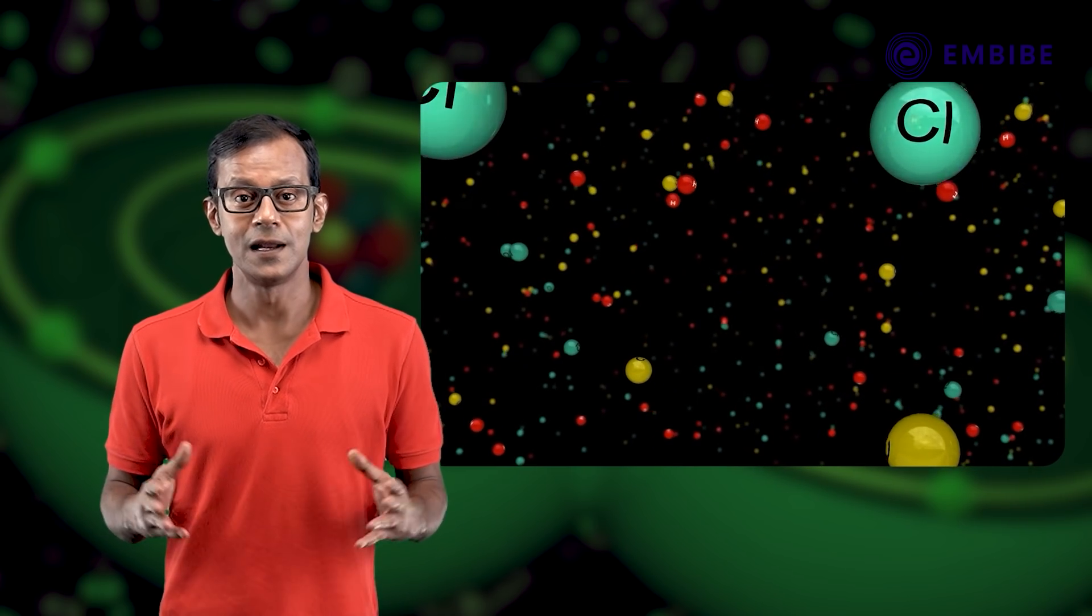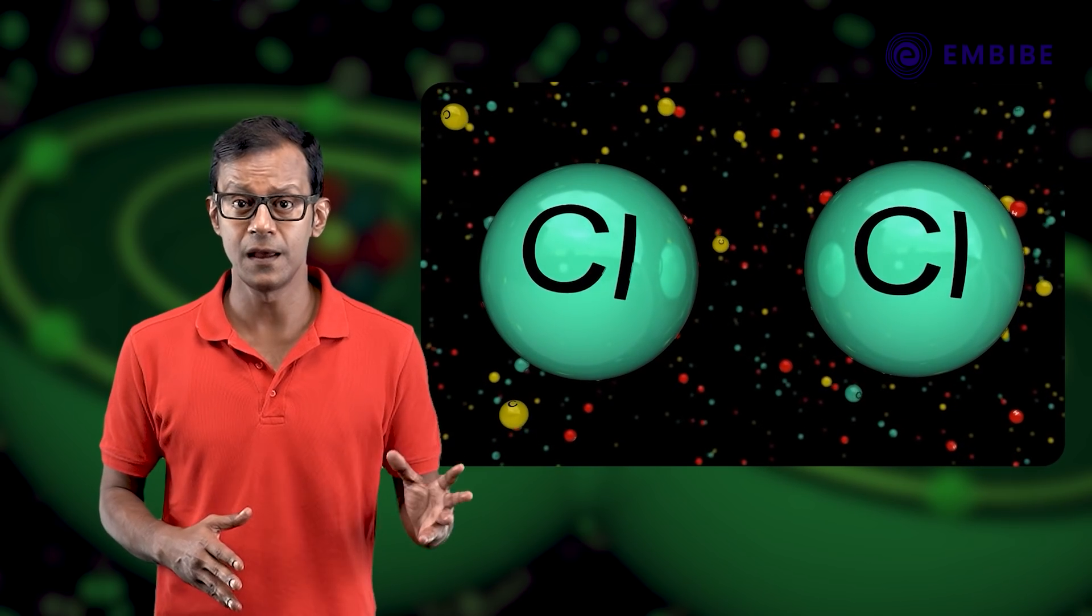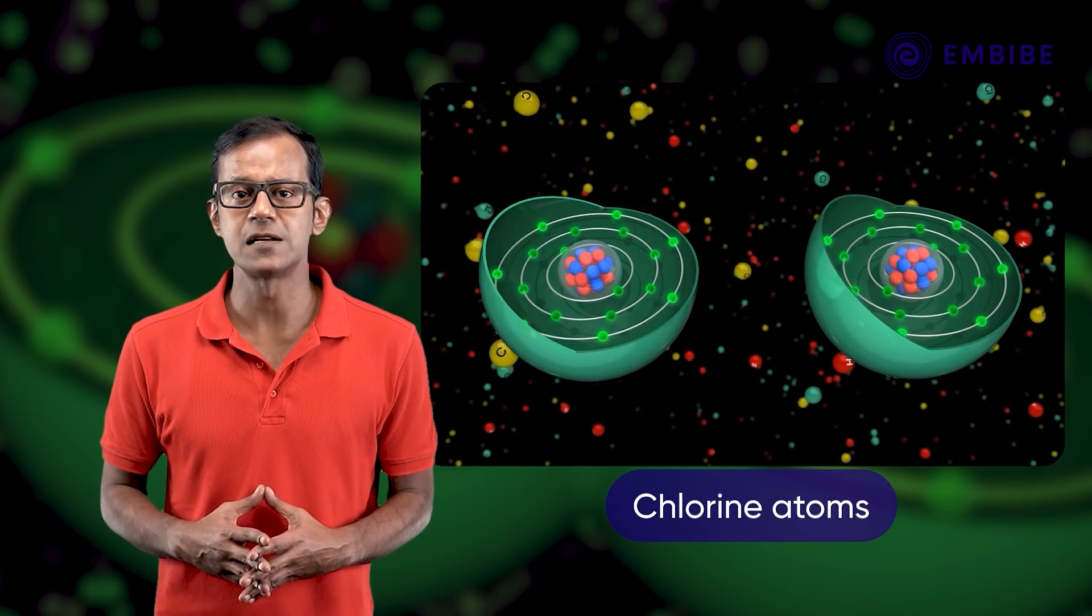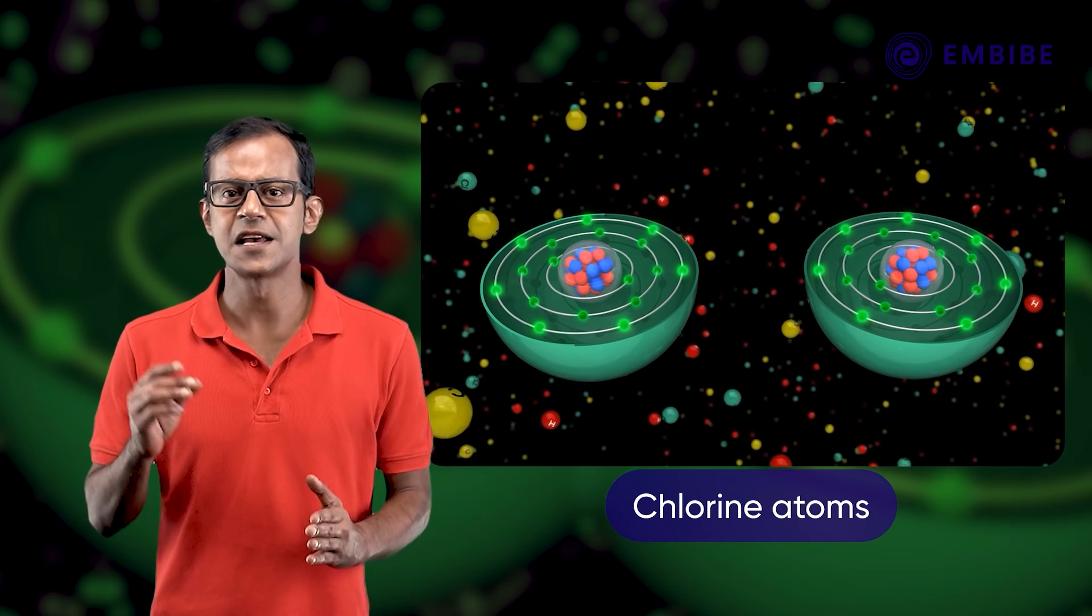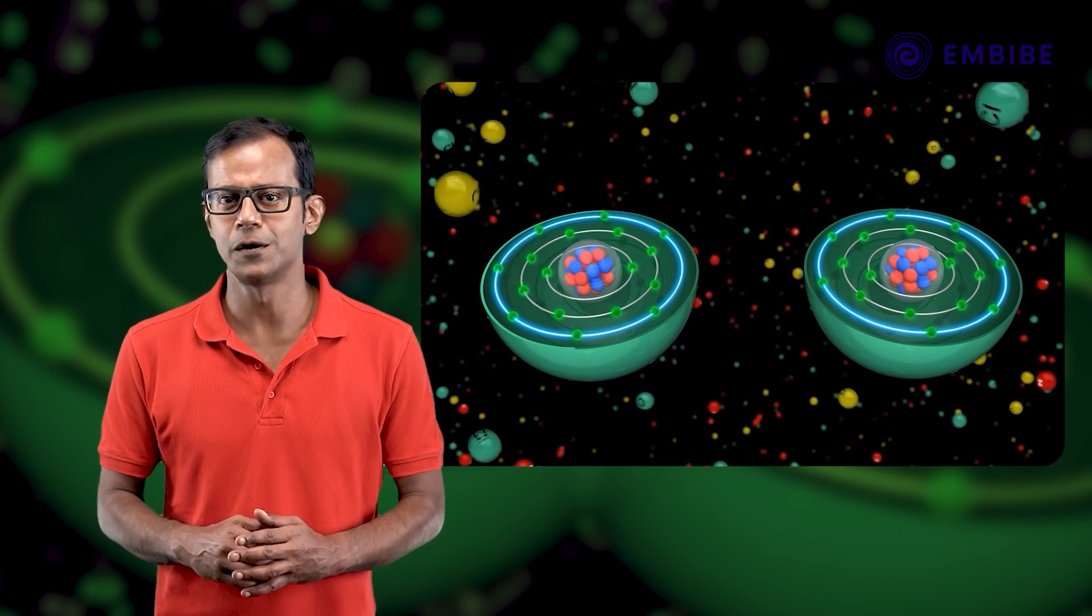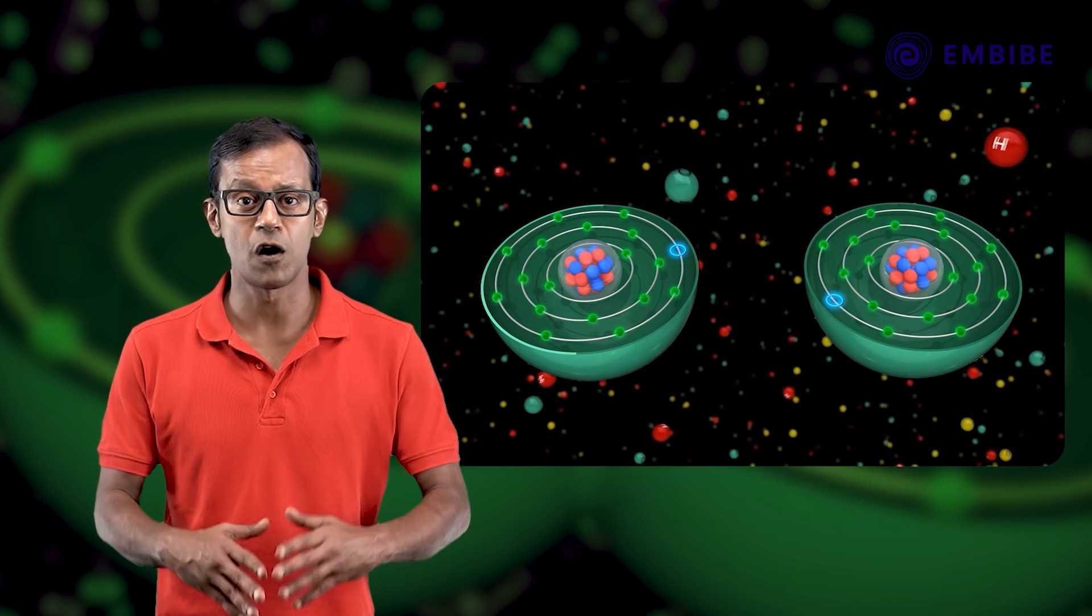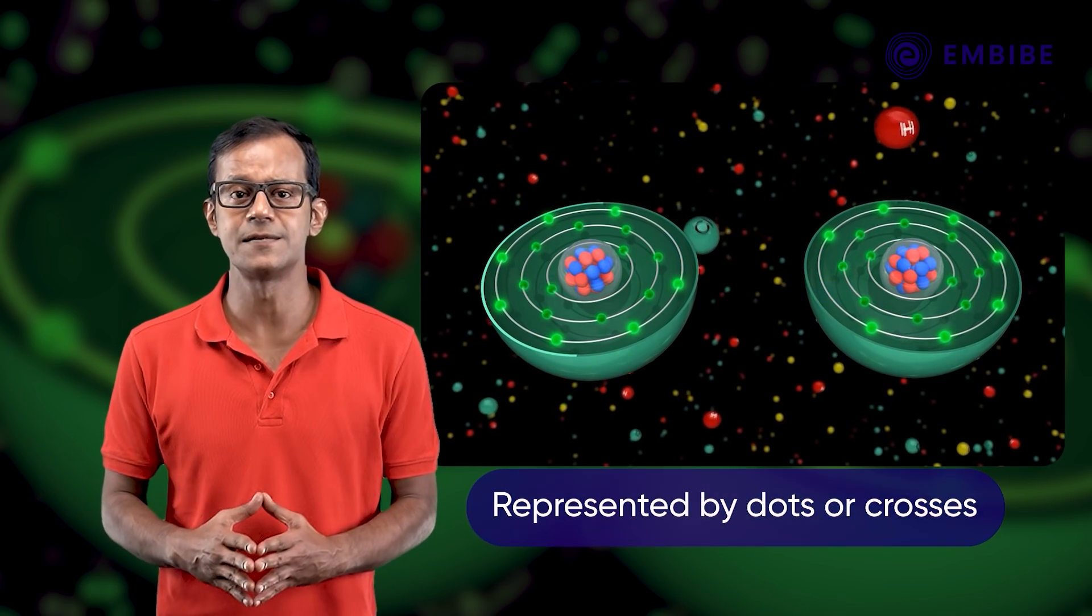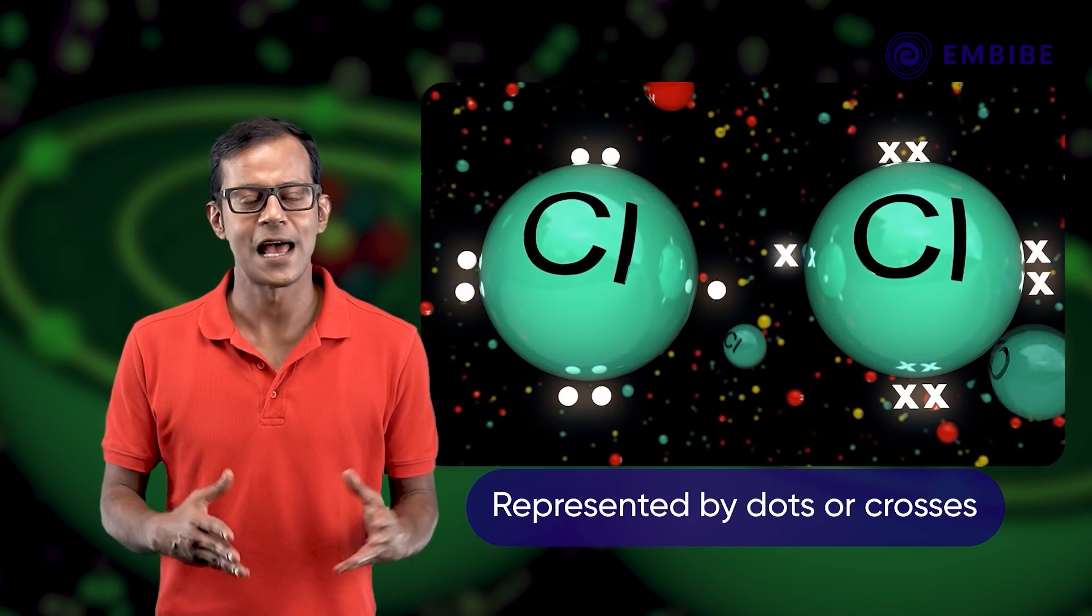For example, let us consider the formation of a chlorine molecule. Here, each chlorine atom has seven electrons in its valence shell and is short of one electron to acquire a stable octet. The valence electrons of both the chlorine atoms are represented by dots or crosses as shown.